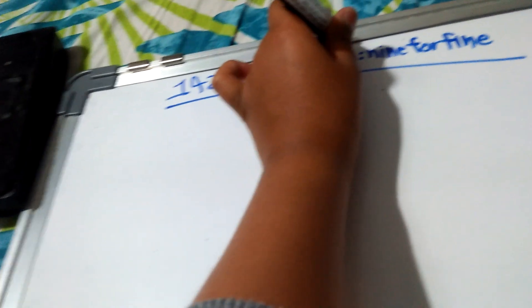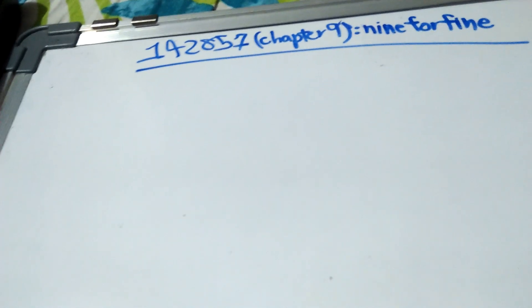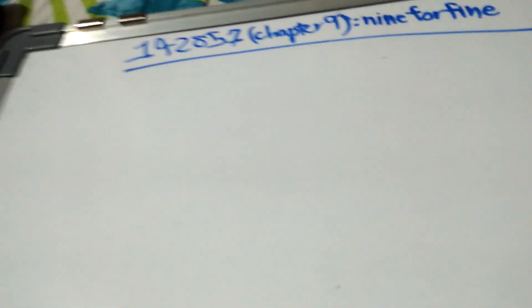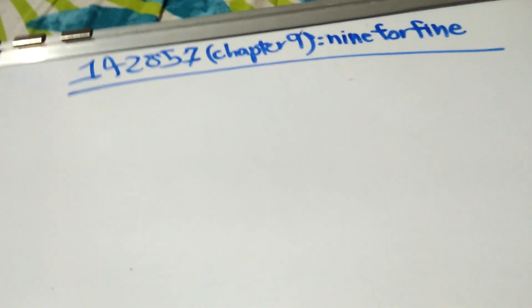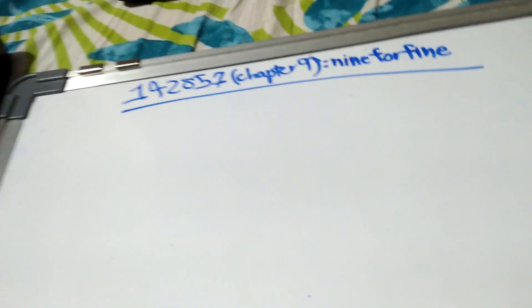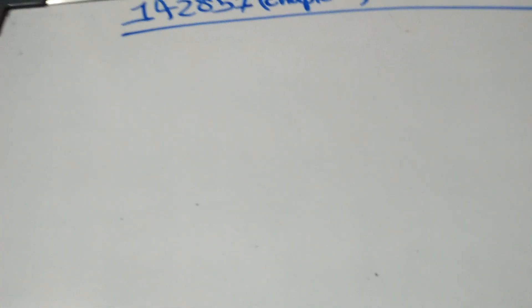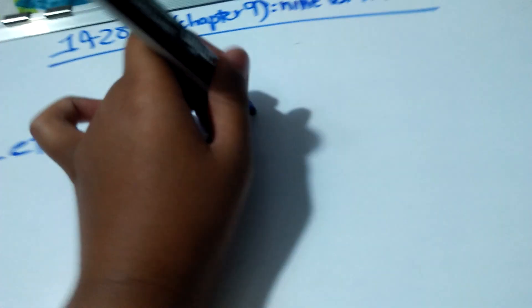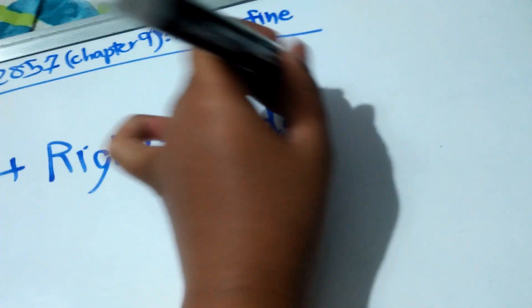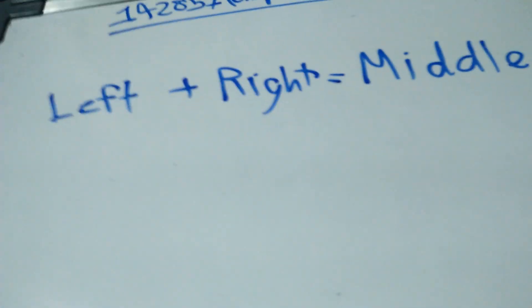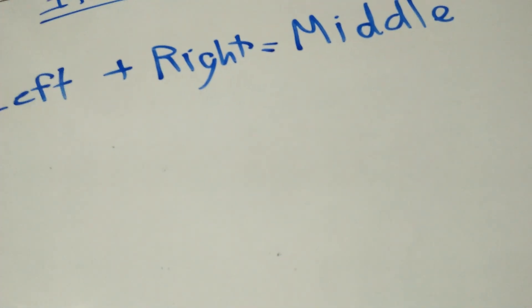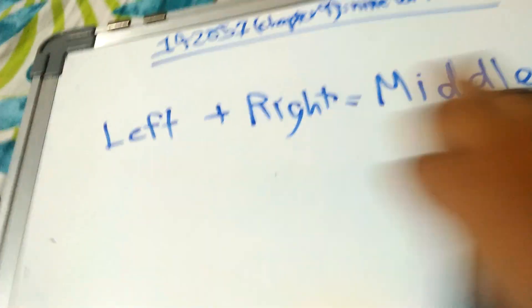Okay, so there are a few subtraction problems using multiples of 142857. You can make sums where the left-hand three digits plus the right-hand three digits equals the middle three digits. For example, there will always be a 999 in the middle of multiples of 7 multiplied by 142857.